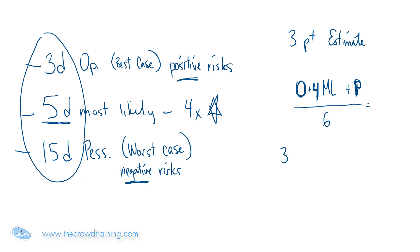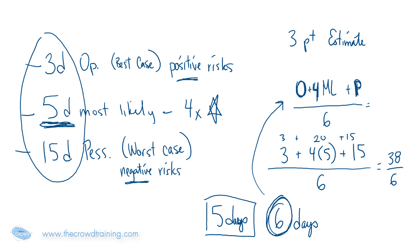Plugging in our numbers, well, our optimistic is 3, 4 times the 5 for our most likely, plus 15. And those will all be divided by 6. So that equals 20 plus 15 is 35, plus the 3 is 38. So 38 divided by 6. It didn't work out perfectly in the math, but it's simple enough. It's approximately 6 and then some numbers. Let's just go 6. So we're actually estimating 6 days. Now, that's different than our 5 days. We could still go with our 5 days and schedule that and hope that we meet that, or we can go with the 6 days using this 3-point estimate because this might be more realistic.